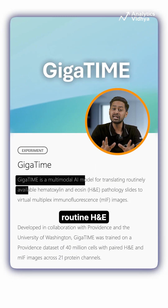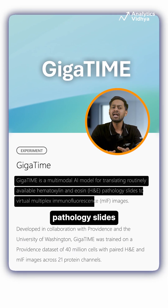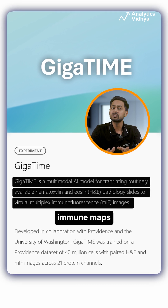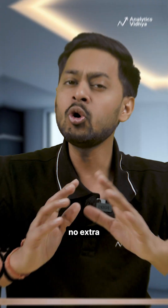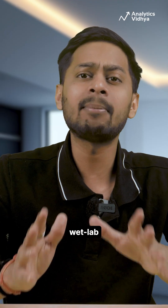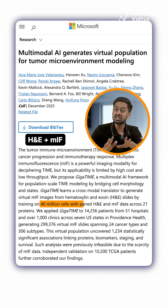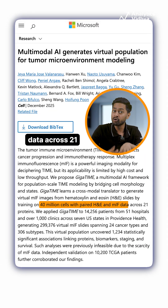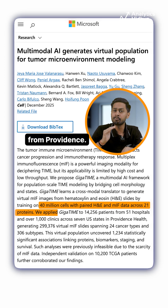GigaPath takes routine H&E pathology slides and virtually generates super detailed immune maps called MIF images — no extra wet lab experiments needed. It is trained on 40 million cells with paired H&E plus MIF data across 21 proteins and provenance.